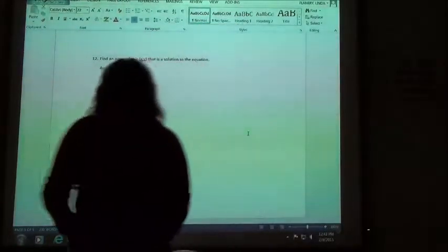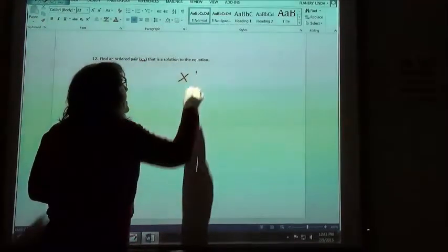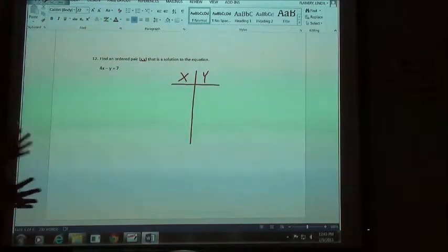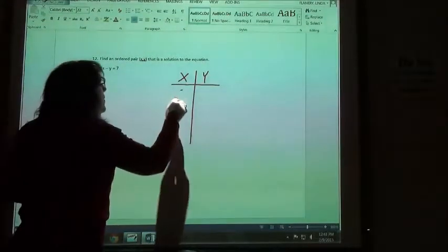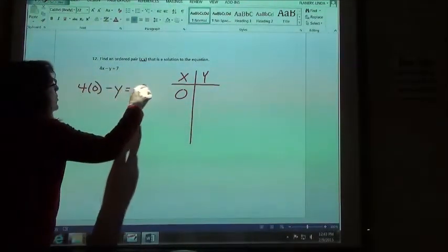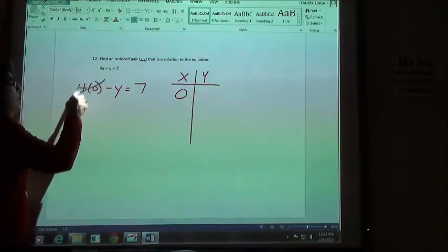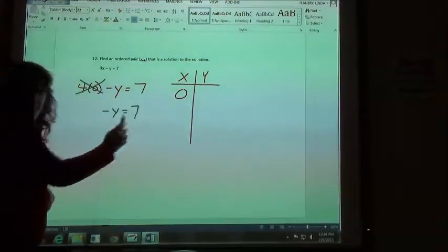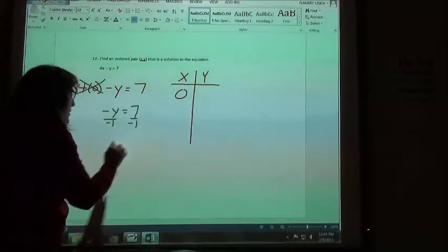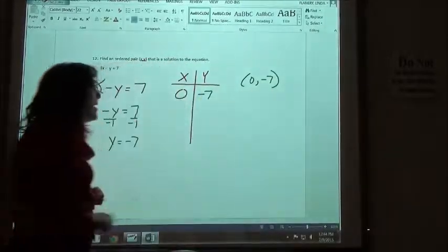Number 12: find an ordered pair x, y that is a solution to the equation 4x minus y equals 7. We said we could pick anything we wanted for x or for y to find our ordered pair. On Alex, they like to use 0. On this last one, I'm going to do two different ways. First of all, I'm going to put 0 in for x. If I put 0 in for x, 4 times 0 minus y equals 7. And then we have to solve that. When I do 4 times 0, that cancels out because it's 0. Negative y equals 7. Since this is negative y, we end up dividing by negative 1, so y equals negative 7. So 0, negative 7 is one of your many possible solutions.